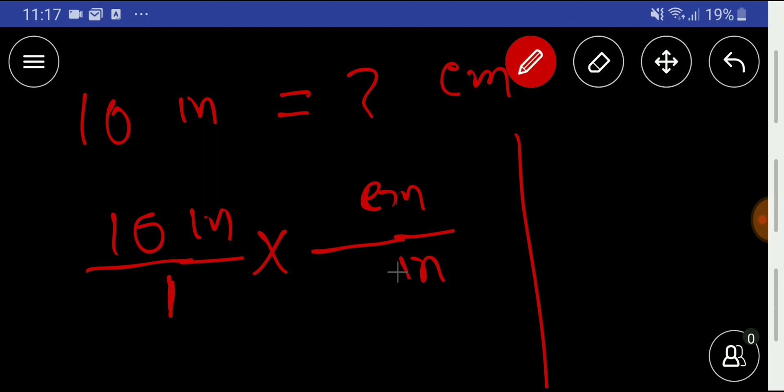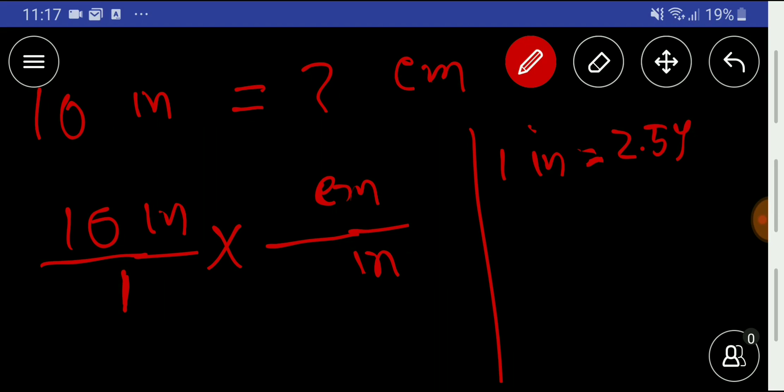2.54, and with inches we are getting 1. So these things and these things will cancel out, and we are getting here 10. We are getting here 10 times 2.54.